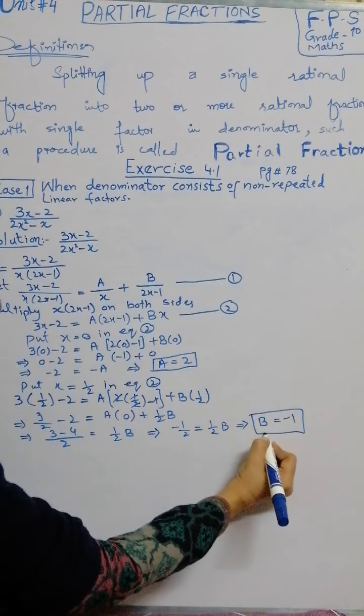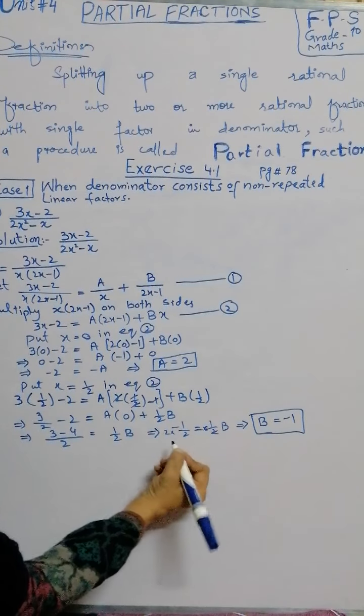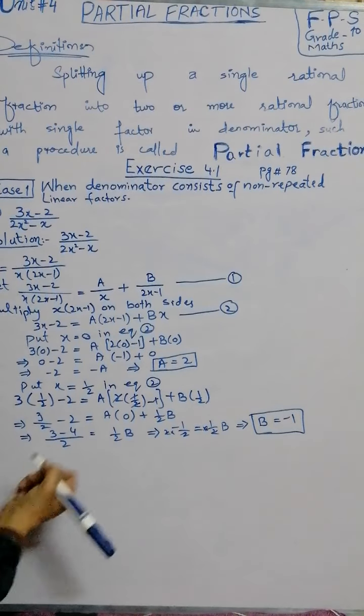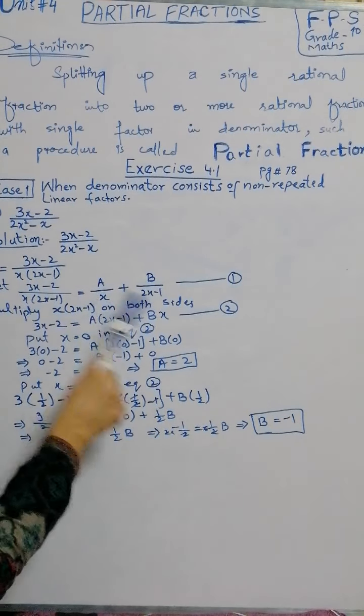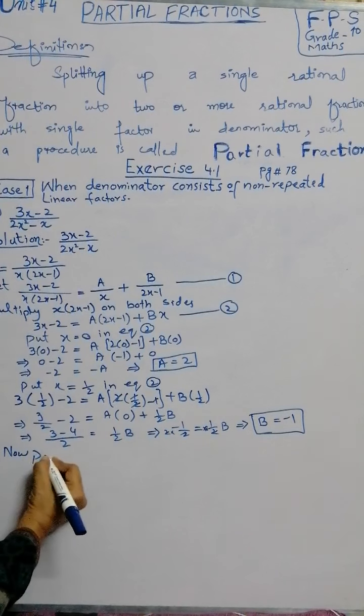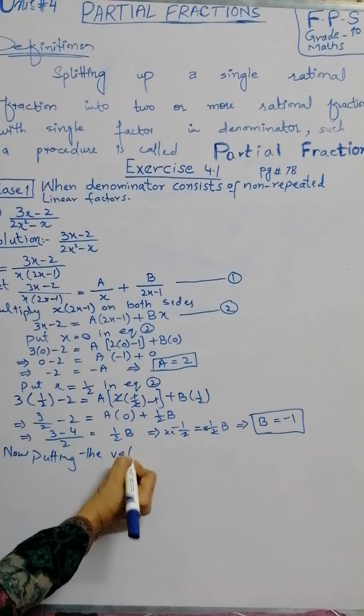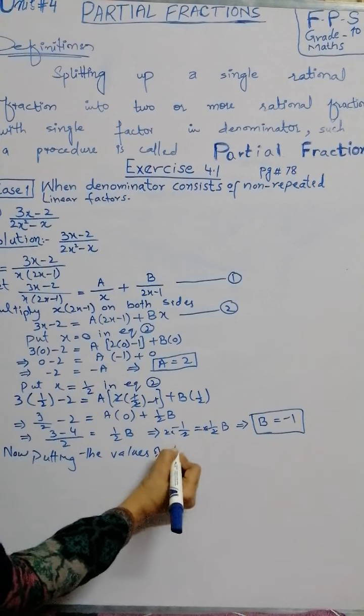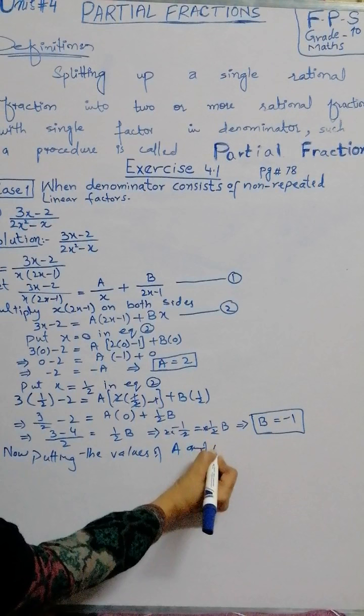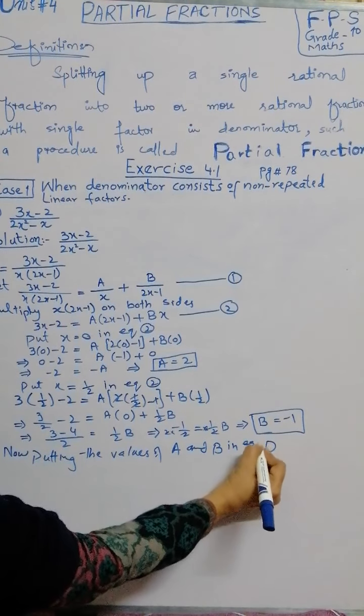By multiplying 2 on both sides, we get the value of B which is minus 1. So B's value is minus 1.